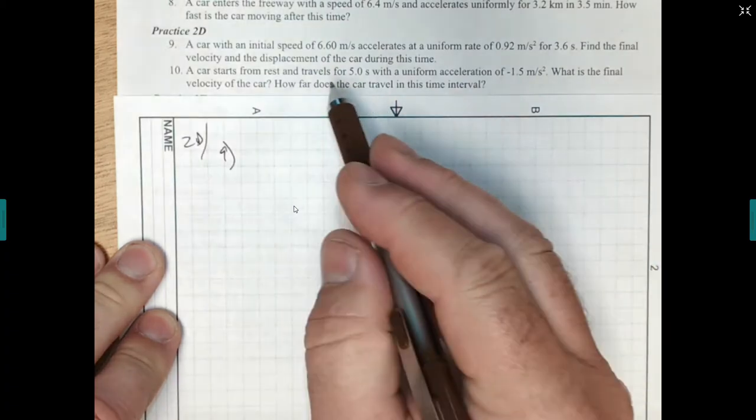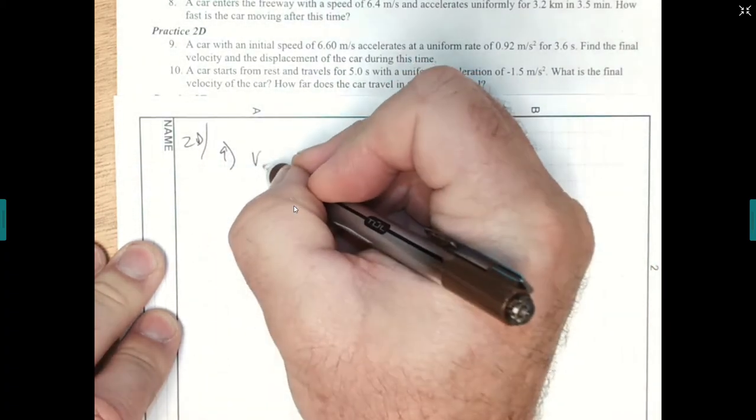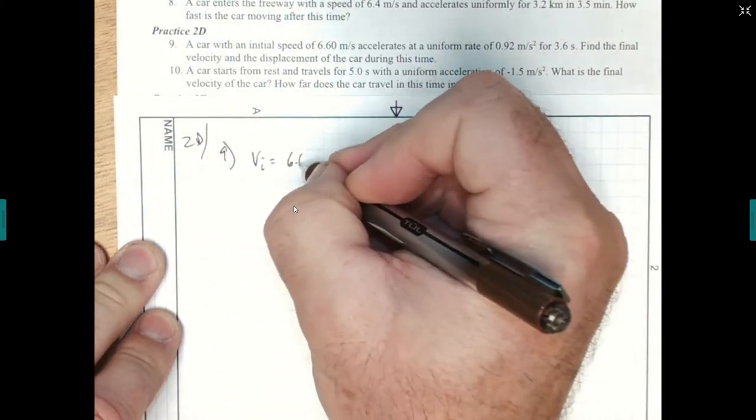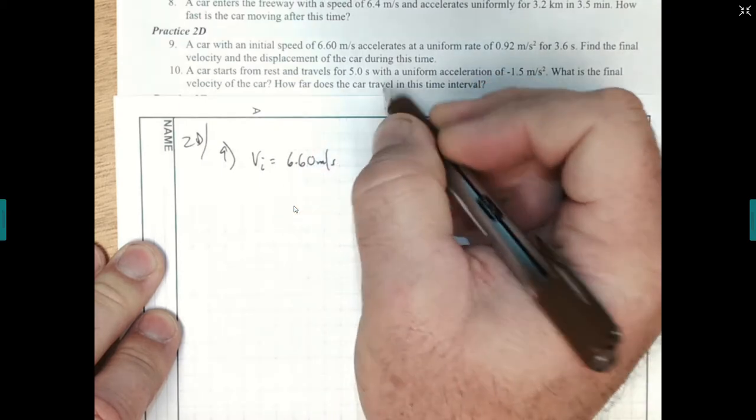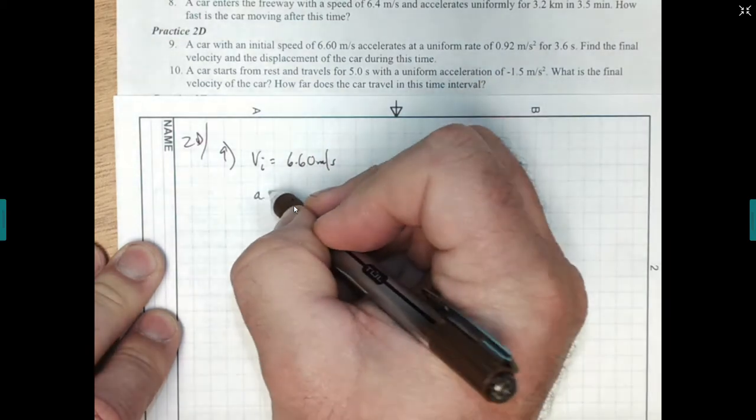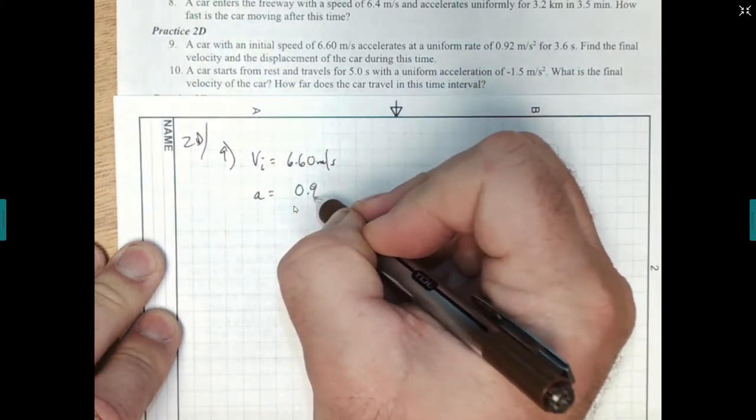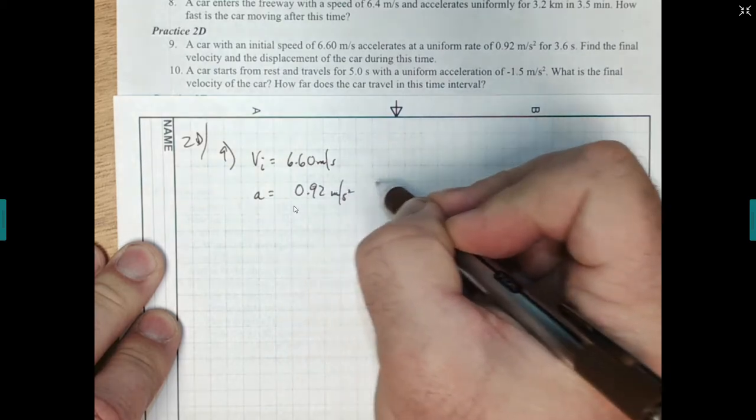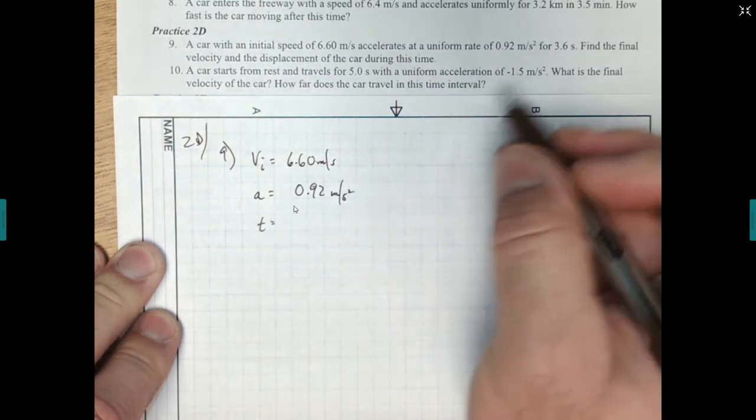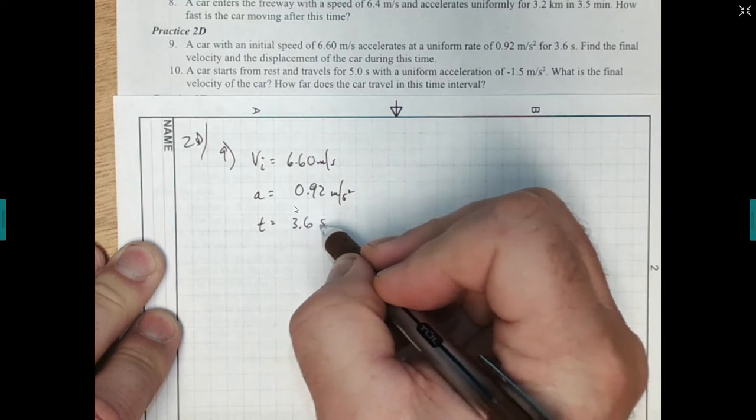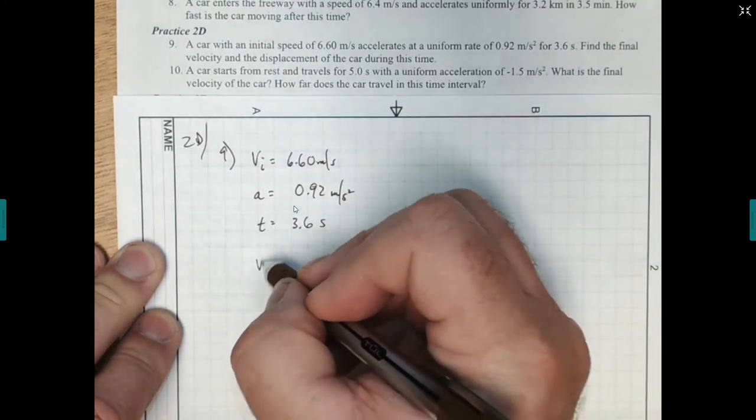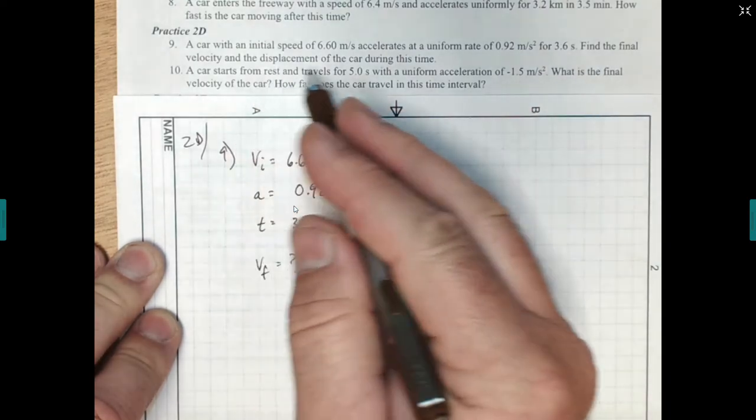So on number 9, it says a car starts with initial speed of 6.6, so my initial velocity is 6.60 meters per second. Accelerates at a uniform rate, so my acceleration is 0.92 meters per second squared, and my time is 3.6 seconds. Let's find the final velocity and the displacement.